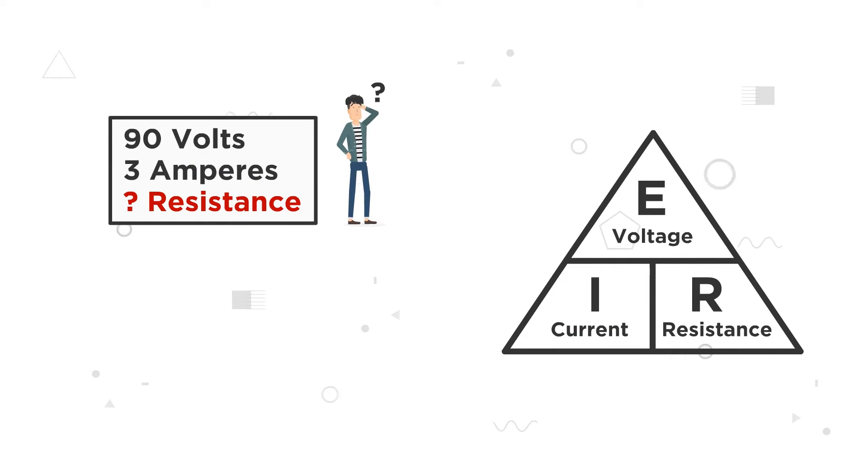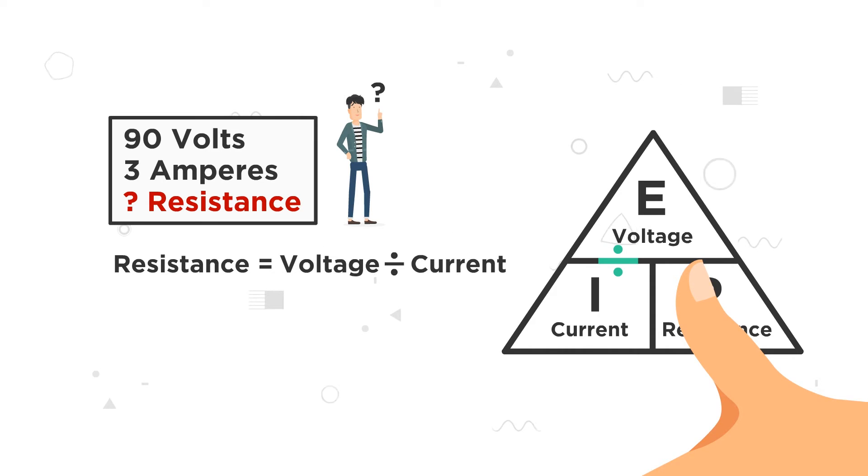A question on the test states that we have 90 volts and 3 amperes, so we will need to find the resistance. First, put your thumb over resistance. We can see that resistance equals voltage divided by current. 90 volts divided by 3 amps is 30 ohms. That's our answer.